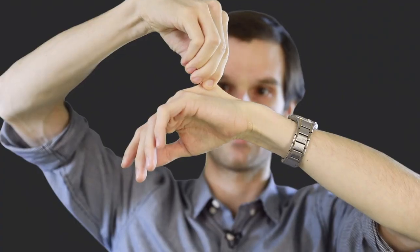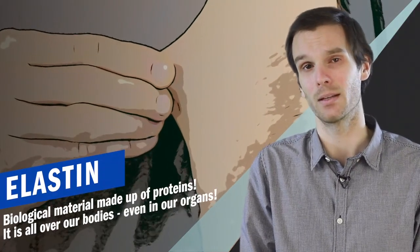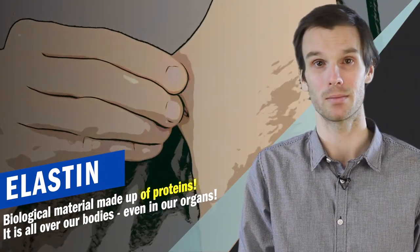For example, pull your skin anywhere. Why is it stretchy? Well, you have something called elastin in there. Elastin is a material made up of proteins and it is all over our bodies, even in our organs.